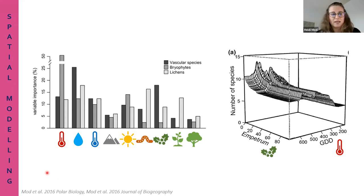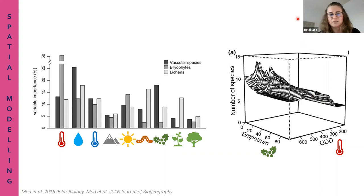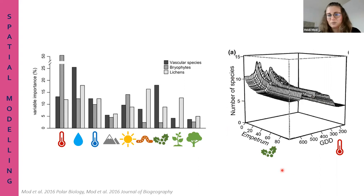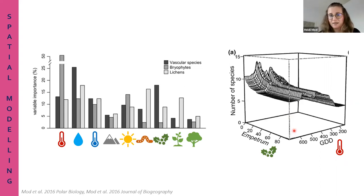A lot of what we see from spatial modeling is something we already know from ecological theory, but by using spatial models, we can get more detailed understanding and quantify it - even get some numbers out. Here on the right is a 3D plot showing statistical interactions among different predictors. On the z-axis is number of species (vascular plants), and on the x and y-axes are summer temperature representation and cover of Empetrum. We identified a statistical interaction between Empetrum and growing degree days - the effect of growing degree days on species richness depends on the amount of Empetrum, the most dominant shrub in Finnish Lapland.